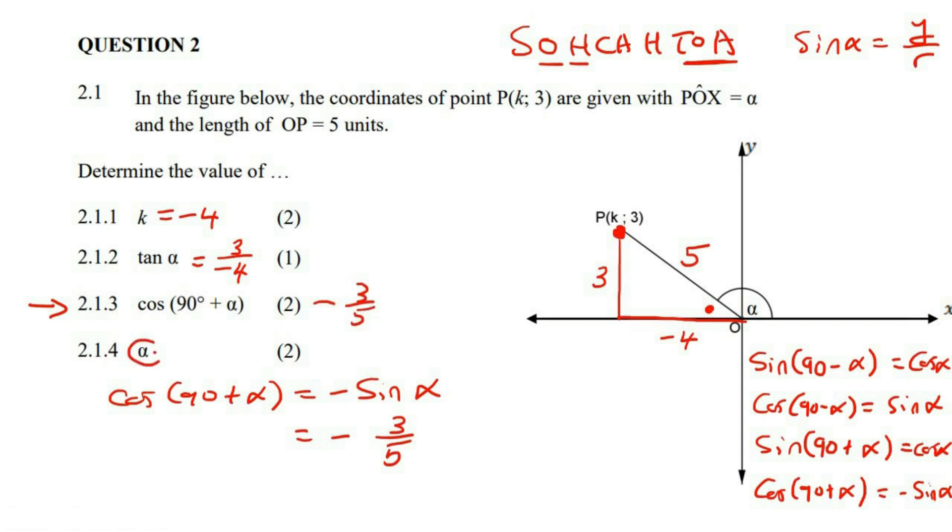Now here they are asking for alpha. So we can just come back to this, and we can say that tan alpha is 3 over negative 4. Now you're just going to use reference angles and all of that from general solution.